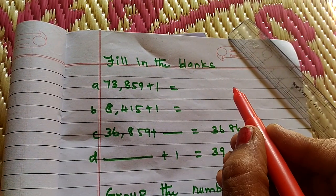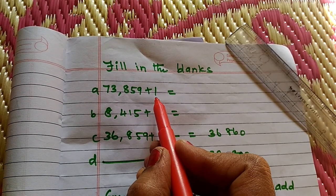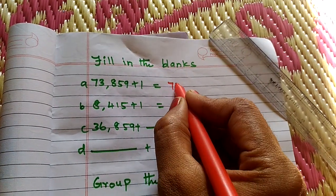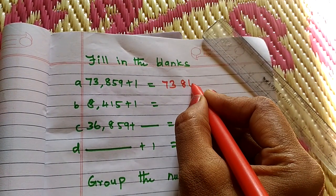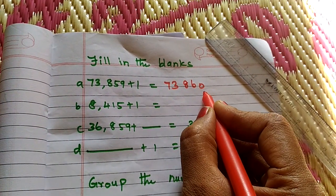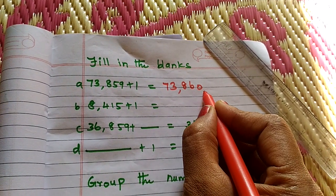Fill in the blanks. 73,859 plus 1. Answer is 73,860. You add 1. 59 plus 1 is 60. Answer is 860. 73,860.